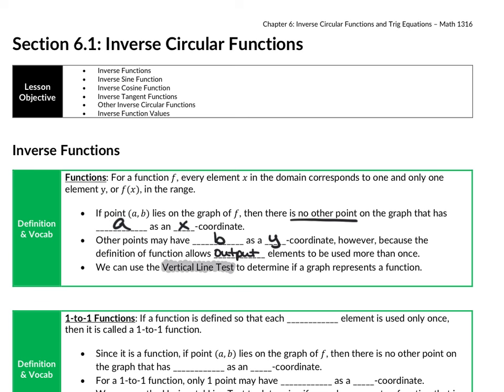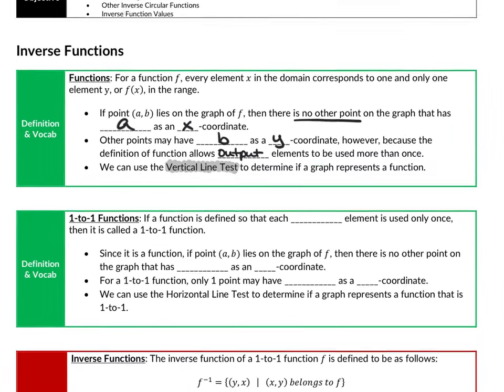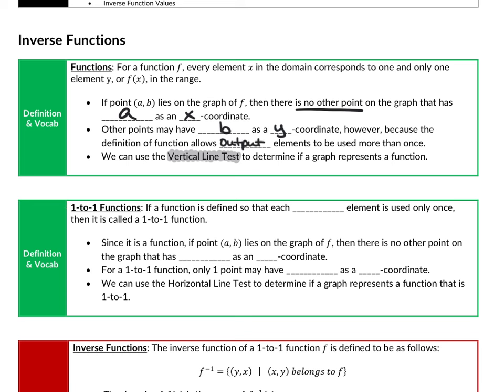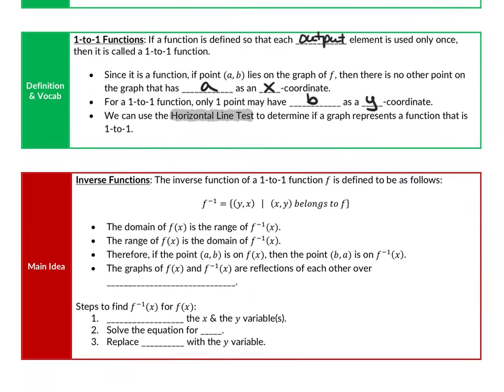A definition we may not have retained from algebra is a one-to-one function. Getting more particular than just a general function, a one-to-one function is defined so that each output value is used only once. In a function, x's cannot repeat but the y's can. In a one-to-one function, neither the x's nor the y's can repeat. Since we're checking that y's don't repeat, we use the horizontal line test to verify a function is one-to-one. If it passes, it has an inverse function.